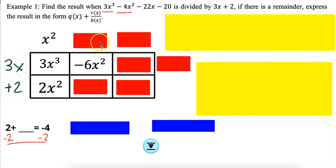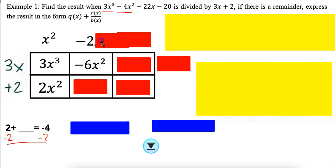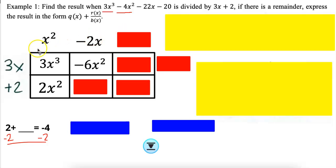Once you've got this term, you can find the top term by reverse multiplying. What times 3 is negative 6? Negative 2. What times x is x squared? x. Once you have this top middle box, you can find the bottom middle box by multiplying: negative 2 times 2 is negative 4x.